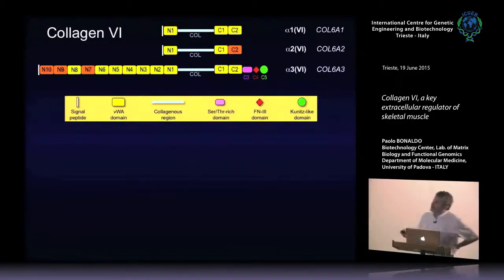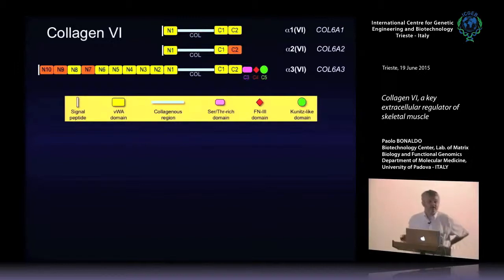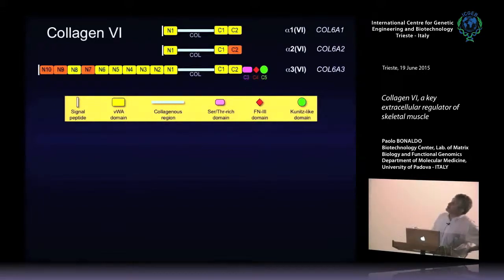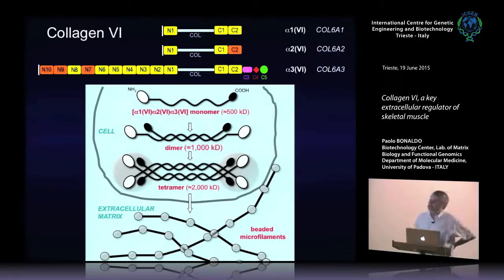Many of these domains are the so-called von Willebrand factor type A domain, a module found in many secreted proteins. Collagen 6 contains many of these domains, some of which are alternatively spliced, so you have isoforms containing or missing some of these domains. The three chains: two are similar in length — about 1000 amino acids — but the other chain is three times larger, more than 3000 amino acids, and at the carboxy-terminus contains additional domains. To form collagen 6 you need all three chains.